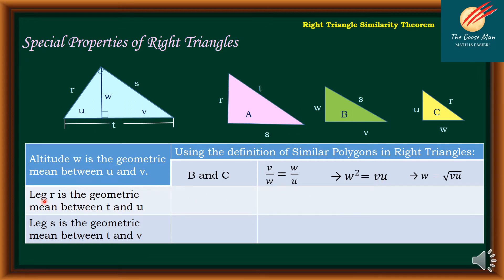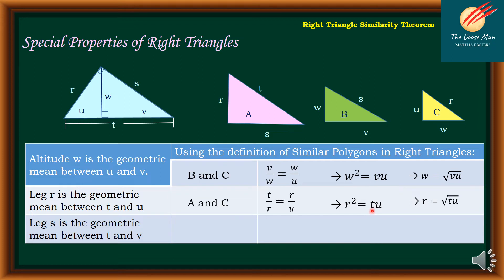Next, leg R is the geometric mean between T and U. Considering areas A and C, the ratio is T over R equals R over U. Using cross-products, R squared equals TU. So, R is equal to the square root of TU.